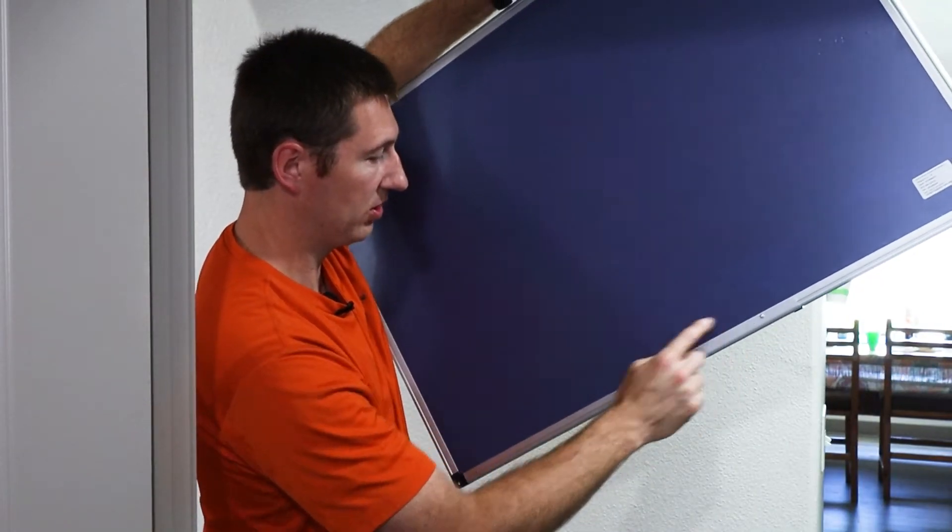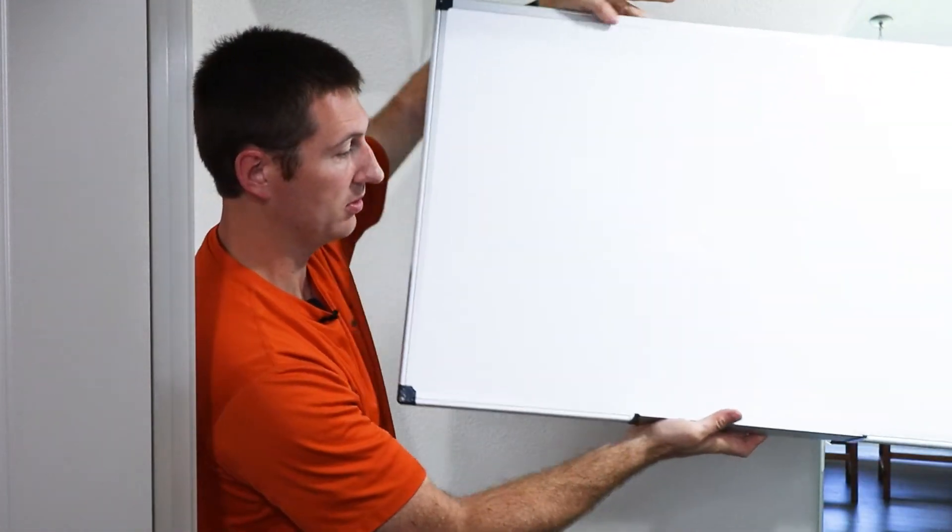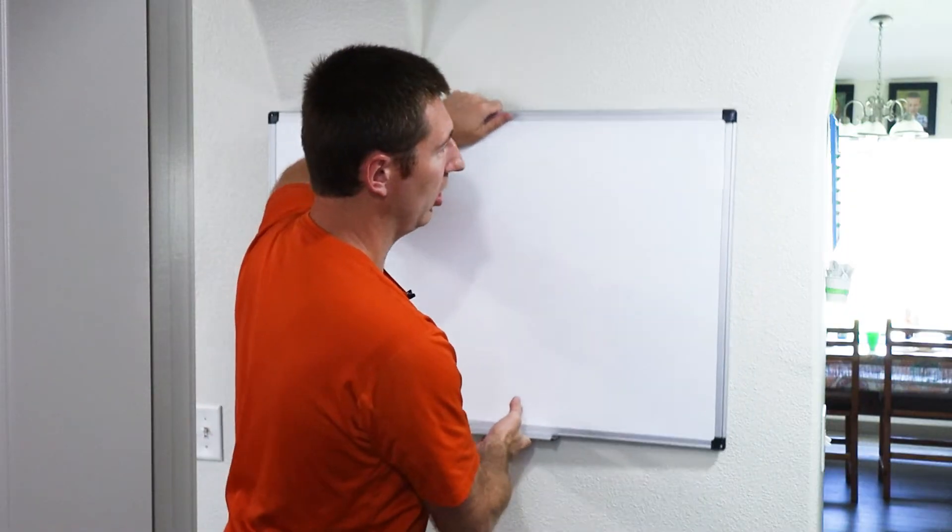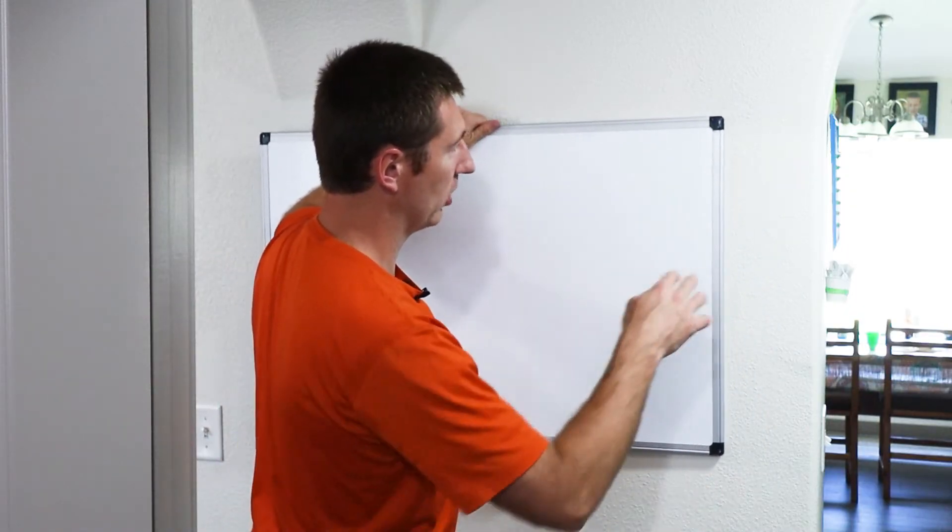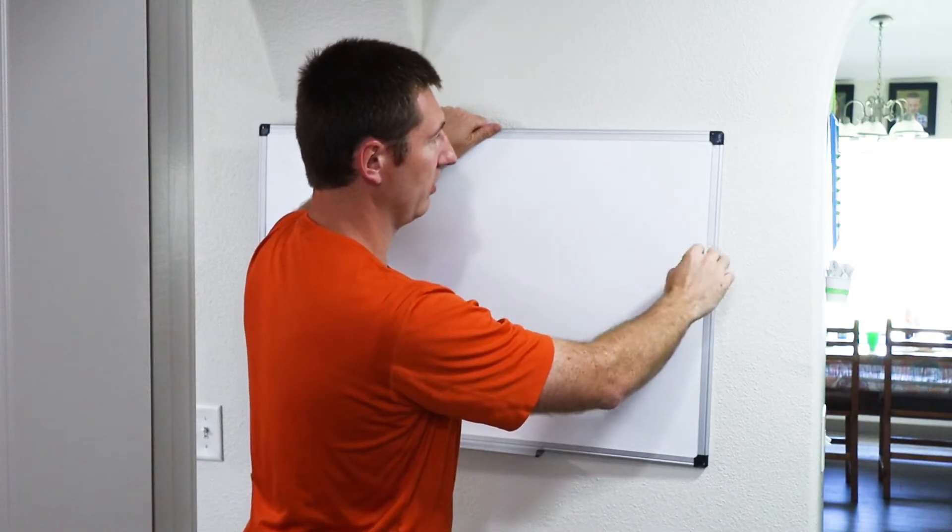Alright, so now we have the screws in here. So the tray is going to be on the bottom obviously. Now we're going to line it up where we want on the wall and then we're going to set the adjustment left and right and then also make sure it's level.